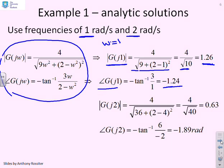For ω = 2, we get 4/√(36 + (2-4)²) = 4/√40 = 0.63. For the phase: -tan⁻¹(6/(-2)). You have to be careful with the quadrant here, but this comes out to -1.89 radians.